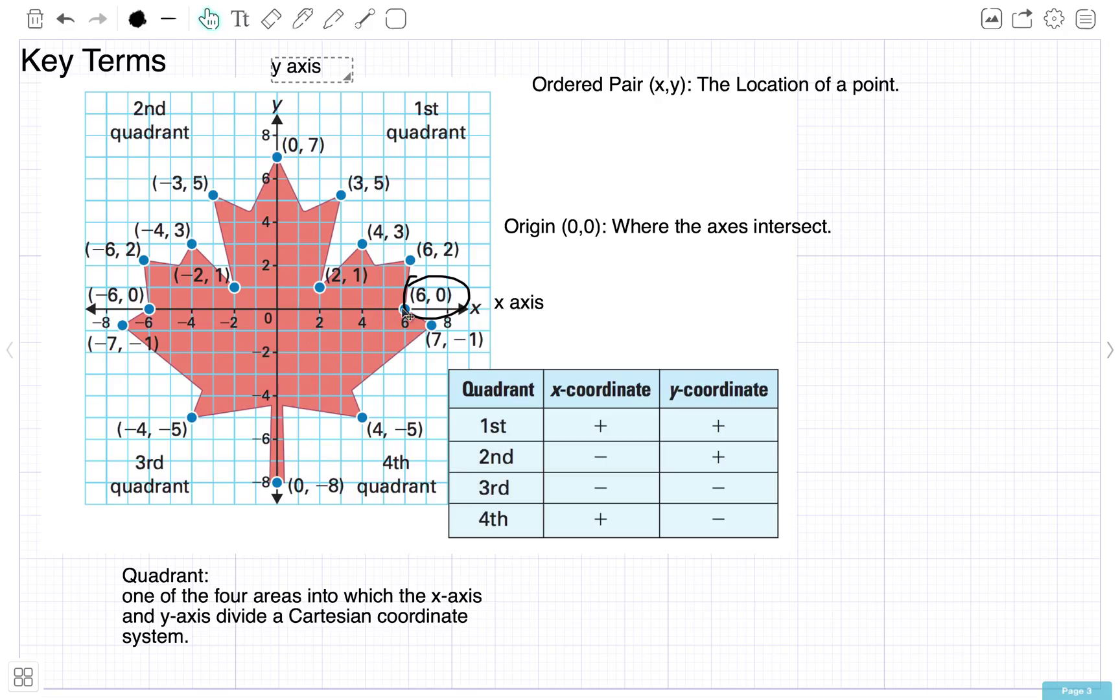First number is always the x-axis. X first. If we're looking at this number here, four, we're going here on your number line. Very similar to the number line we were looking at a couple weeks ago. Four on the number line.